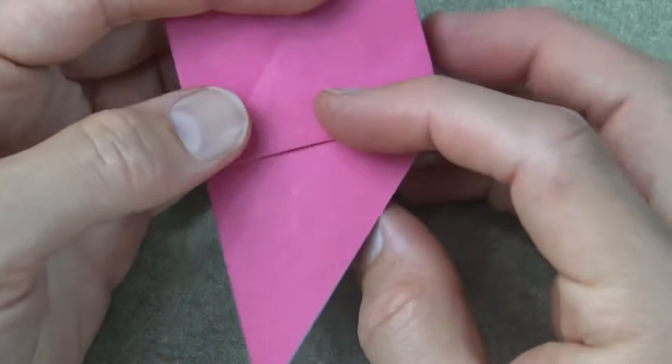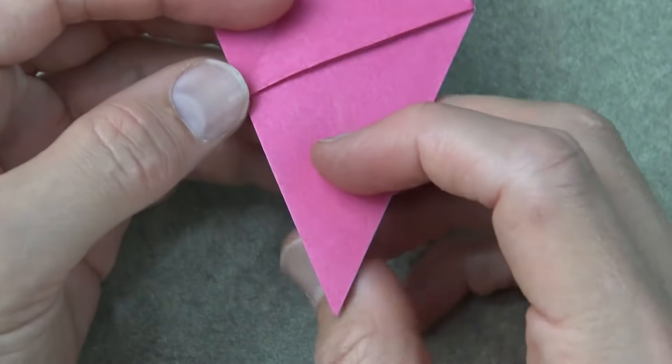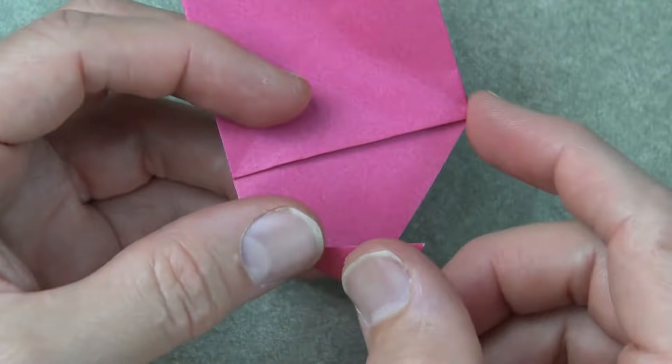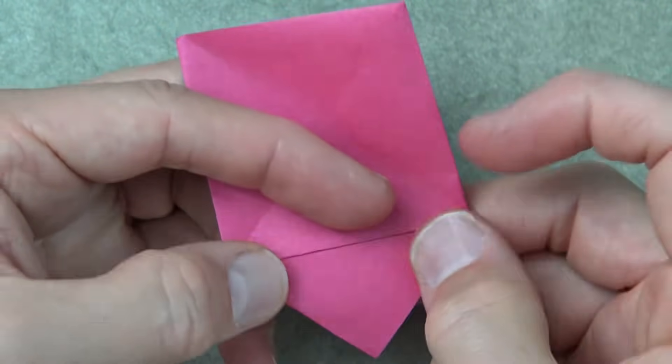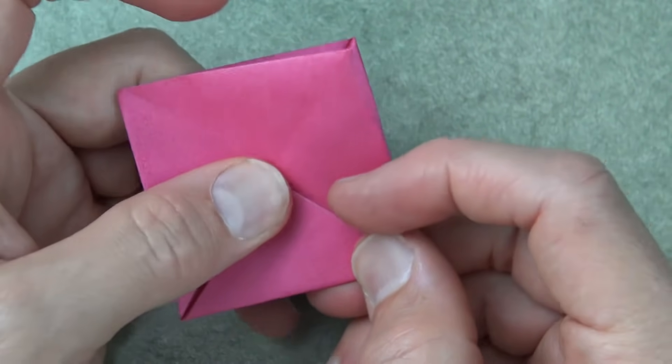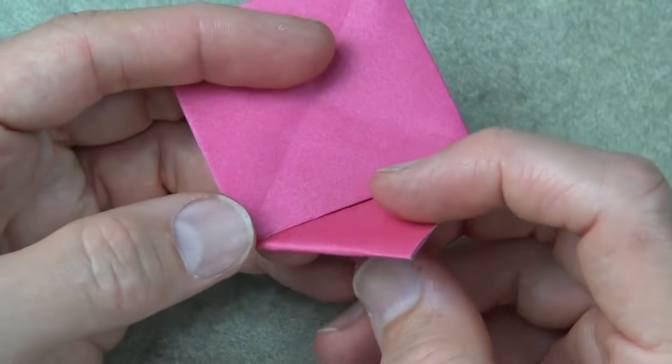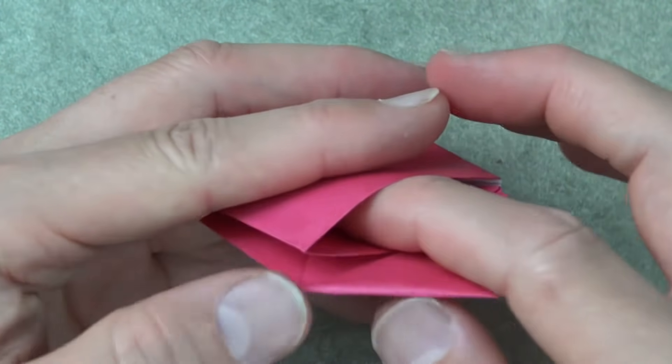Turn over. We need to tuck this flap into this pocket. So first, fold it to this point. Now fold over the edge. Unfold and tuck this flap into this pocket.